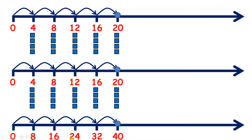Now what do you notice about this number line at the bottom? We have the numbers 8, 16, 24, 32, and 40. So we have our 8 times table. So if you have the 4 times table twice, you have the 8 times table, because 4 plus 4 is 8.